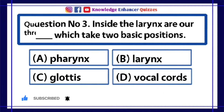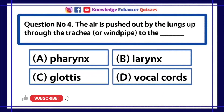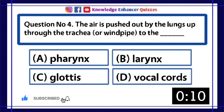Question number 4. The air is pushed out by the lungs up through the trachea, or windpipe, to the dash. A. Pharynx. B. Larynx. C. Glottis. D. Vocal cords.